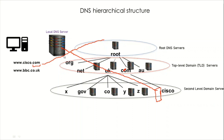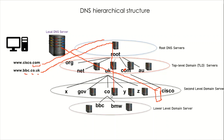For a domain with three parts, such as bbc.co.uk, the process goes one level deeper. Again, the first point of contact is the root DNS server, which gives an IP address to connect with the .uk domain. The .uk domain server gives an IP address for the .co domain, and then the .co domain gives an IP address for the bbc part, which is the lower-level domain server. So we move from root to .uk, to .co, and then to bbc. Finally, this lower-level domain server has the IP address for bbc.co.uk, forwards it to the local DNS server, and the user can connect and render the webpage.